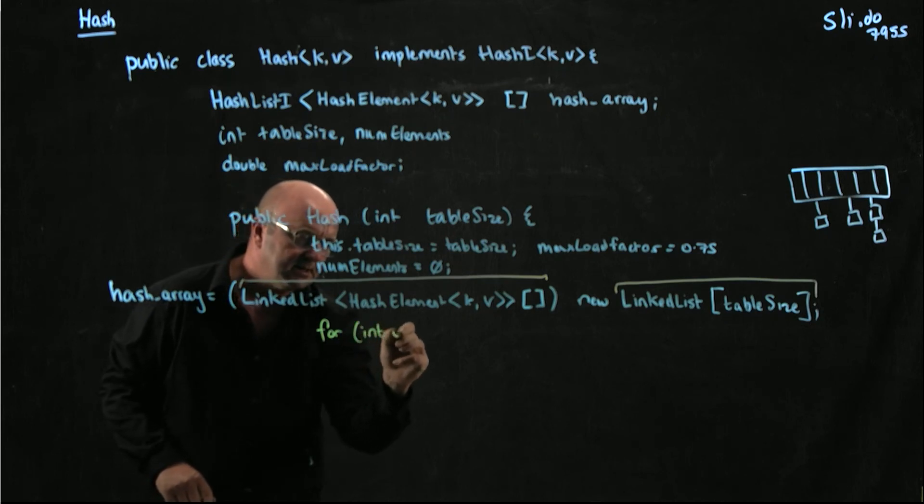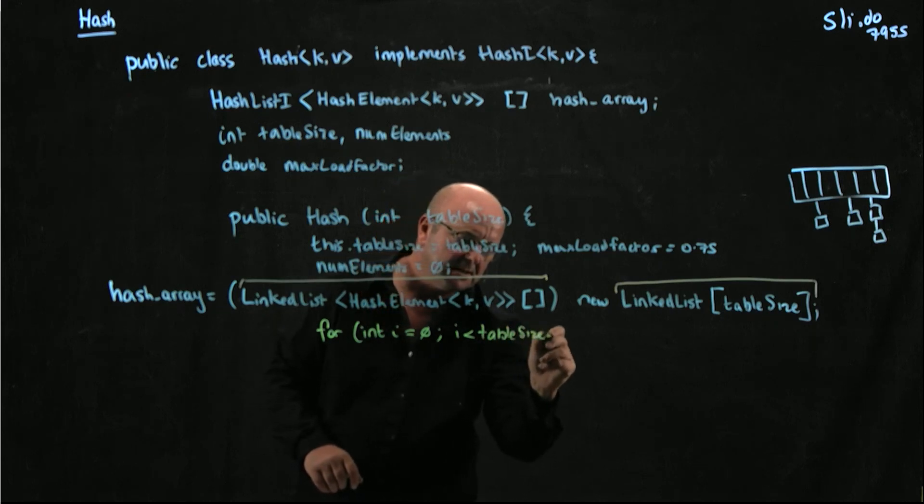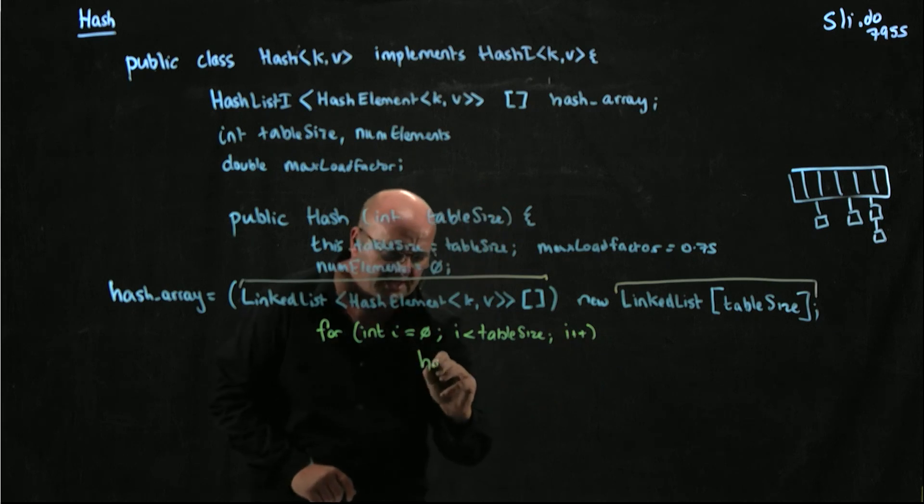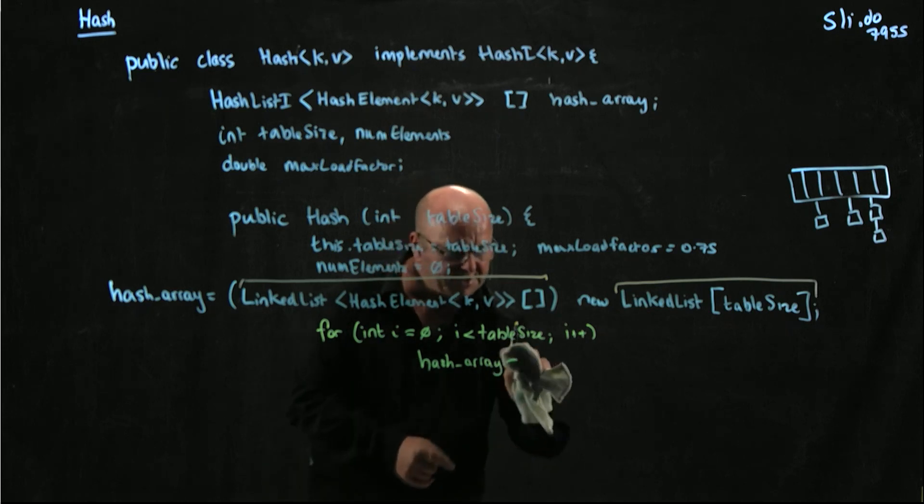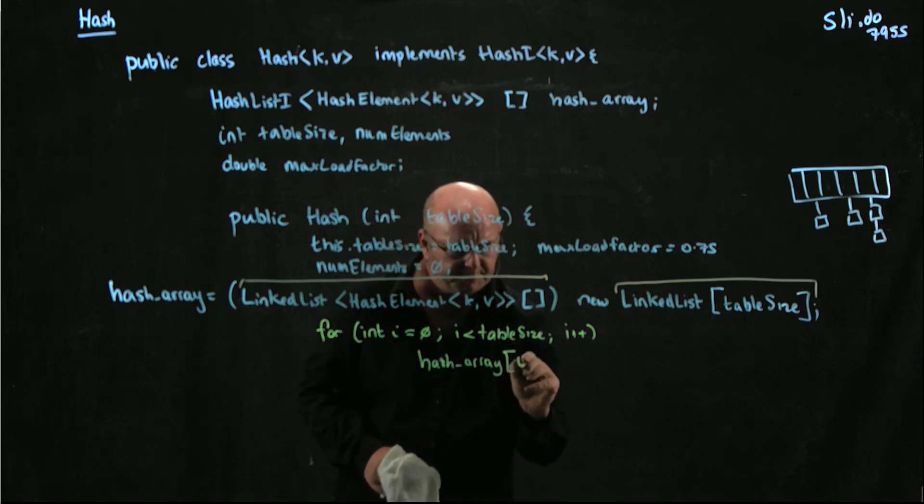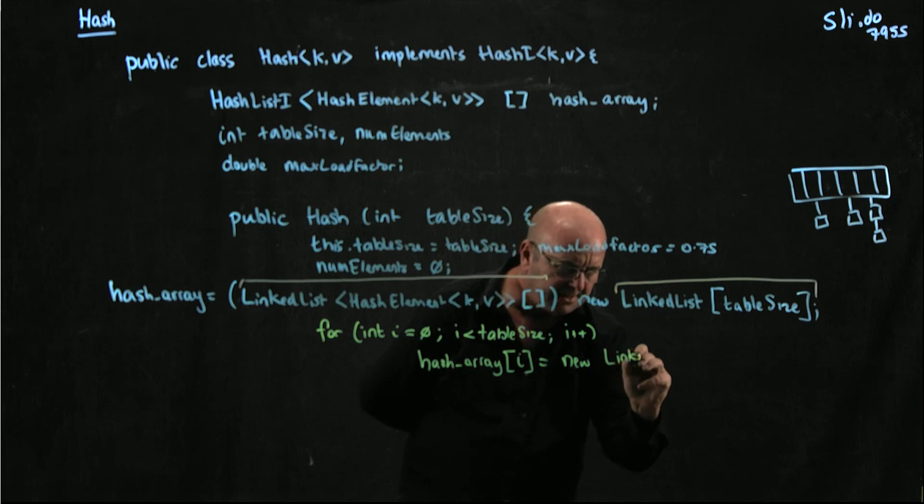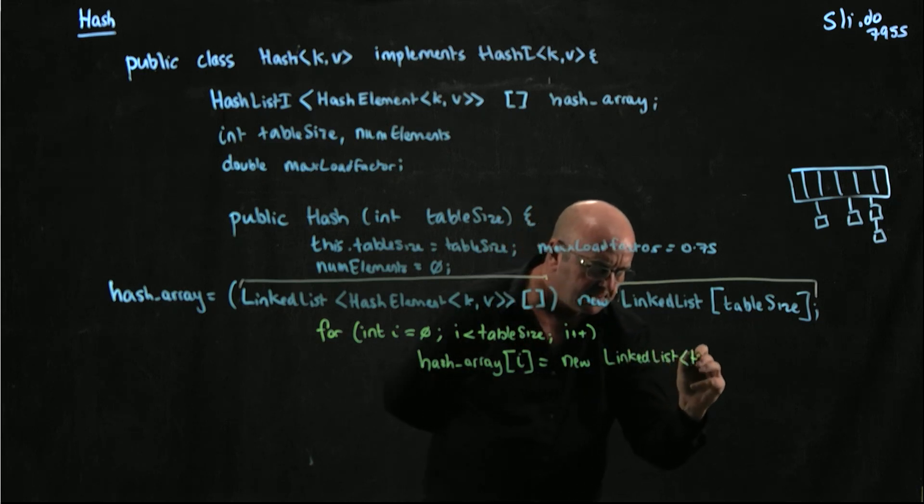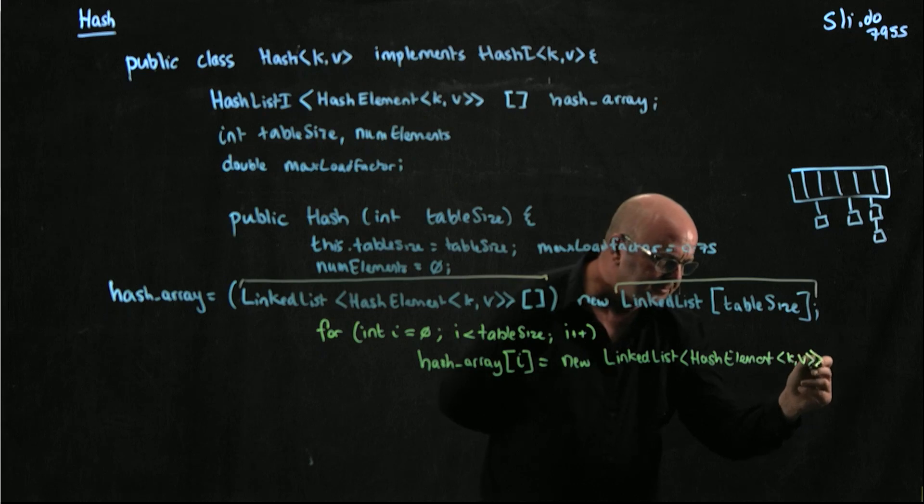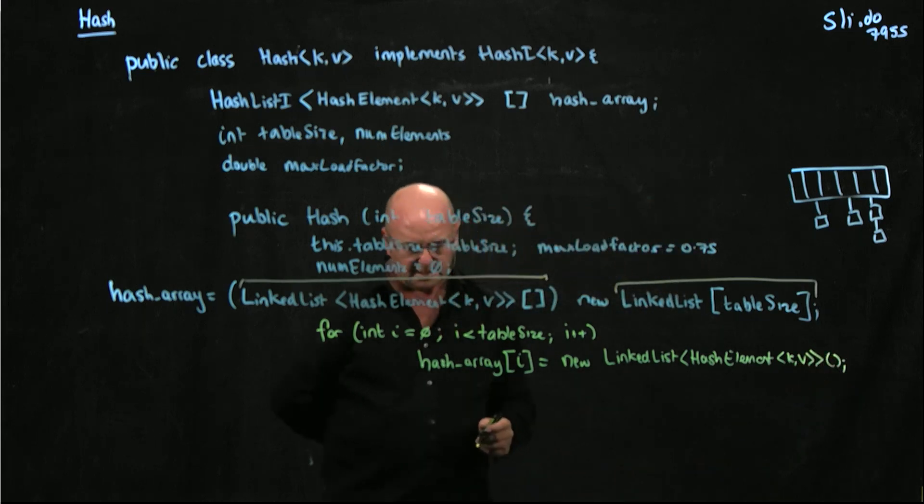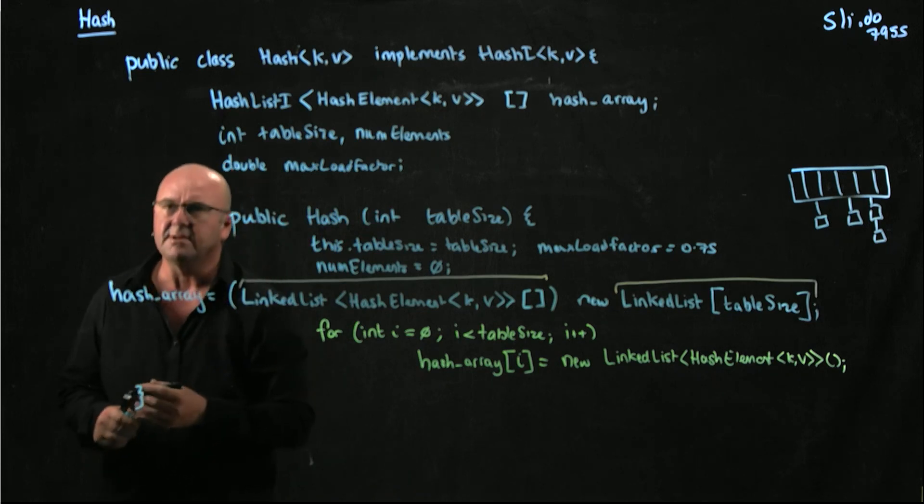So we're going to have for int i is equal to zero, i is less than table size, i plus plus, hash underscore array i, at position i, at position i, is equal to new linked list, hash element kv. And now we've got an empty array of linked lists that we can go and use with add, remove, and so on.